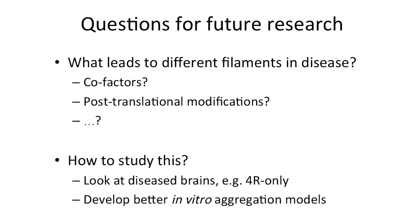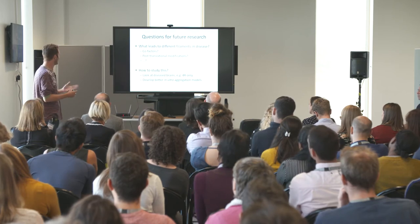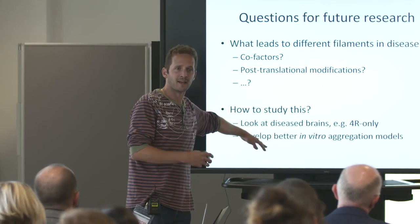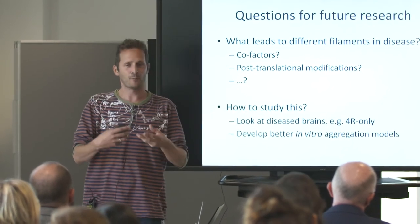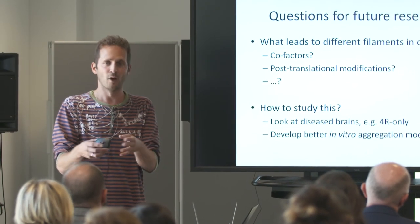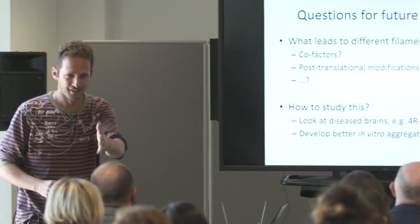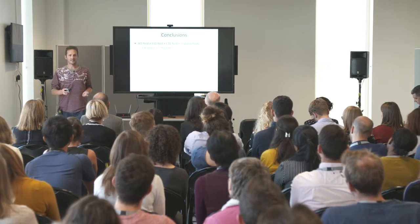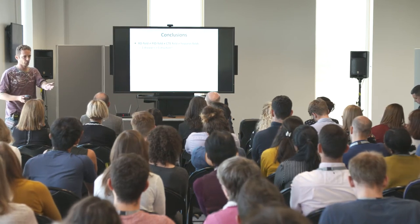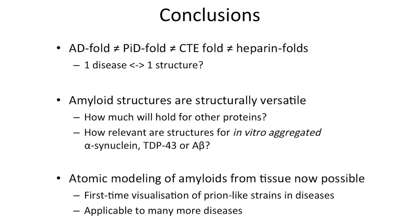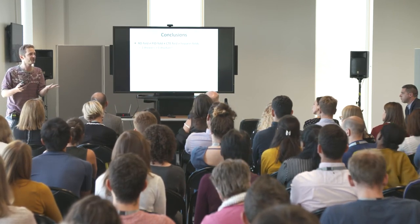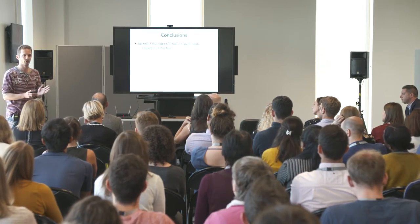What we would like to do next is look at four-repeat tauopathies — there are many members of that family, and possibly the second repeat is involved in structures there. Ultimately, we want to develop methods to make AD-like or CTE filaments in the test tube, because if we can understand how to make one but not the other specifically, we will learn what's important for aggregation. Mouse models also show filaments different from those seen in disease — which may explain why mouse models are not good models for human disease — but at least we can see there are molecular aspects which differ.